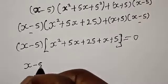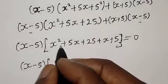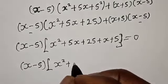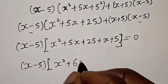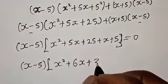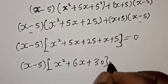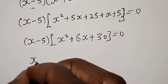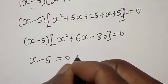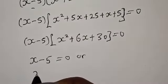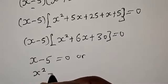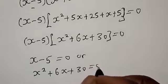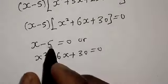(s minus 5) into (s² plus 5s plus s, which is 6s, plus 25 plus 5, which is 30) equals 0. So we have two cases: s minus 5 equal to 0, or s² plus 6s plus 30 equal to 0.